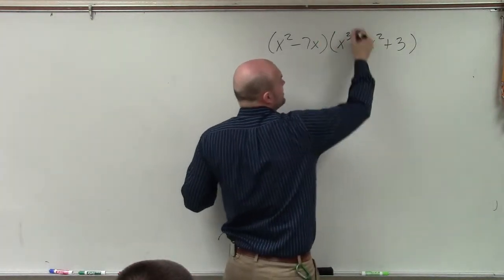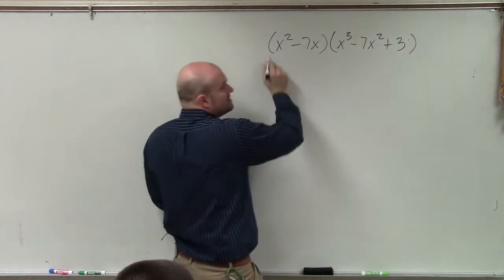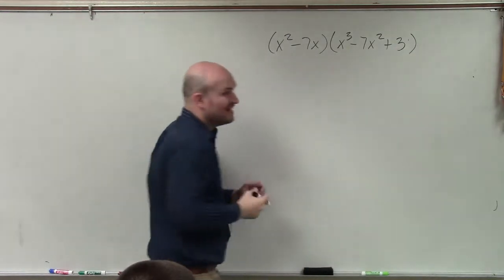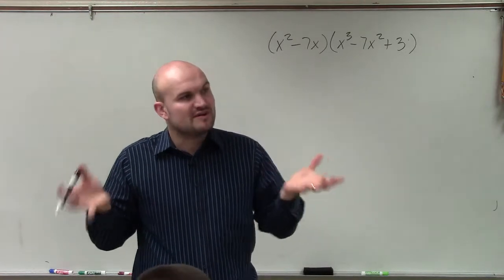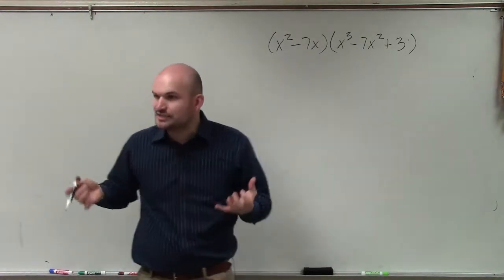You need to multiply this term times all three of those terms, and then this term times all three of those terms. And so basically, you're doing six products, and it becomes very difficult sometimes to organize everything so you have it.